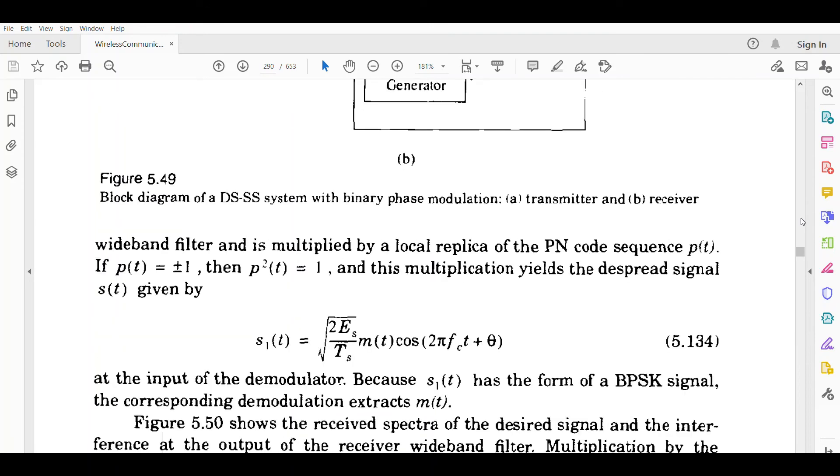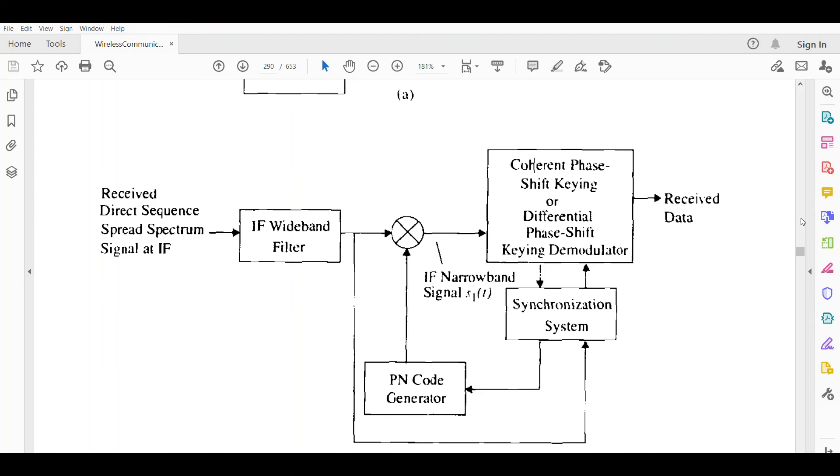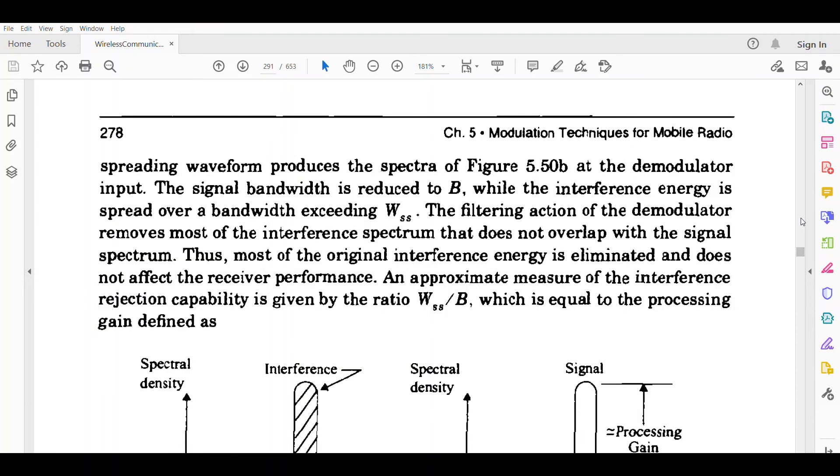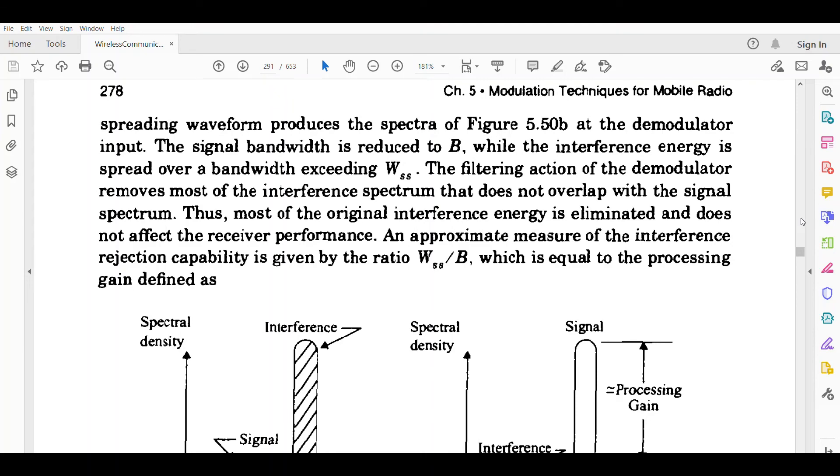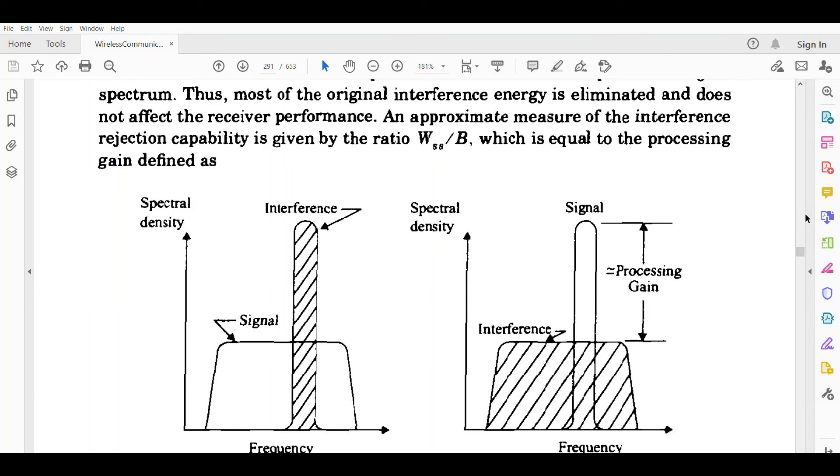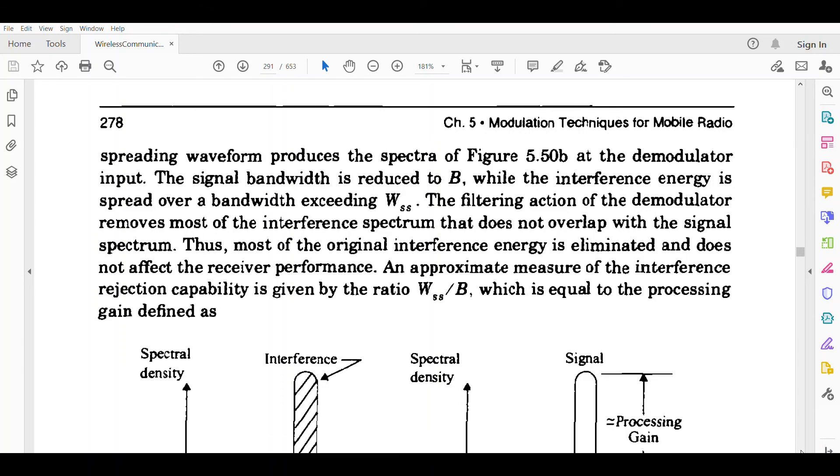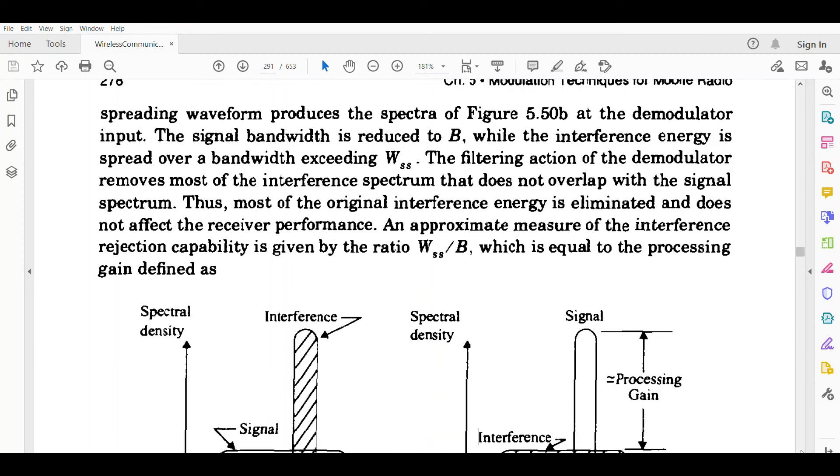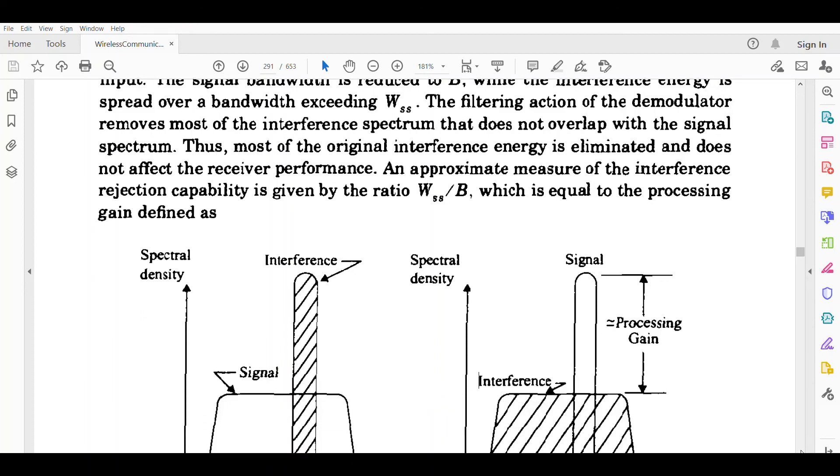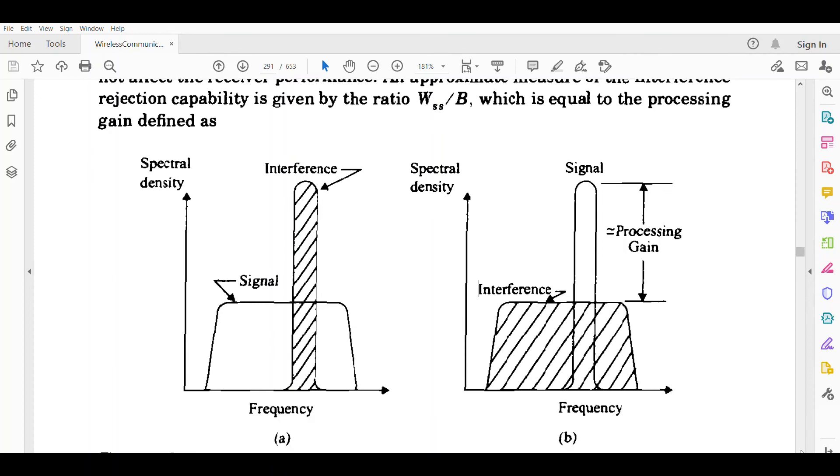Figure 5.50 shows the received spectra of the desired signal and the interference at the output of the receiver wideband filter. Multiplication by the spreading waveform produces the spectra of figure 5.50b at the demodulator input. The signal bandwidth is reduced to B, while the interference energy is spread over bandwidth exceeding W_ss. The filtering action of the demodulator removes most of the interference spectrum.